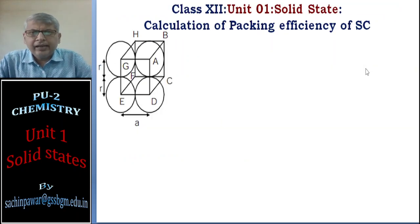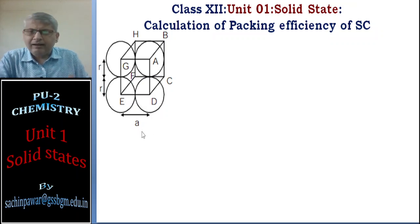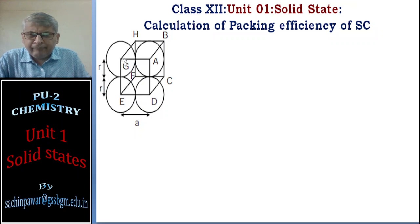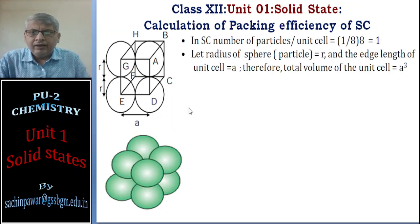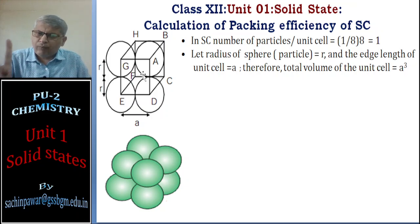First, calculation of packing efficiency of simple cube. The cube has edge length a (length = breadth = height = a), with particles only at the corners. The number of particles per unit cell = (1/8) × 8 = 1. So there is one particle per unit cell in the simple cube.